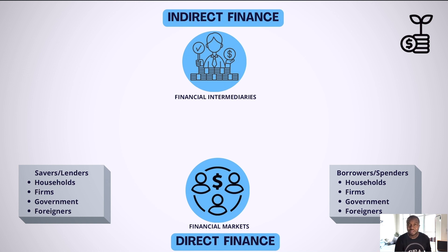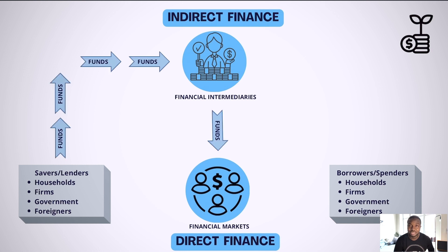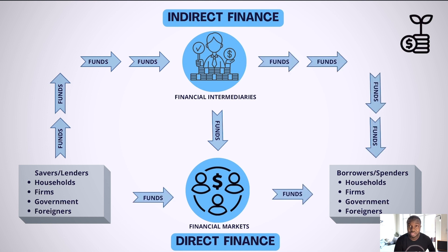Households, firms, governments, and foreigners can be lenders as well as borrowers in the financial markets. Financial intermediaries include commercial banks, investment banks, and pension funds. These institutions act as middlemen between two parties in a financial transaction. A borrower or lender can either go directly to the financial markets to borrow or lend, or do so through a financial intermediary.